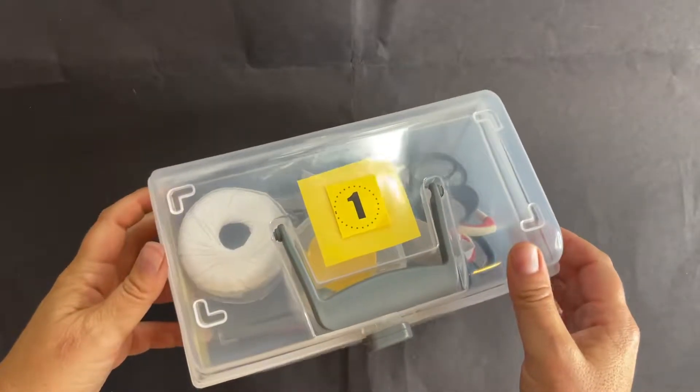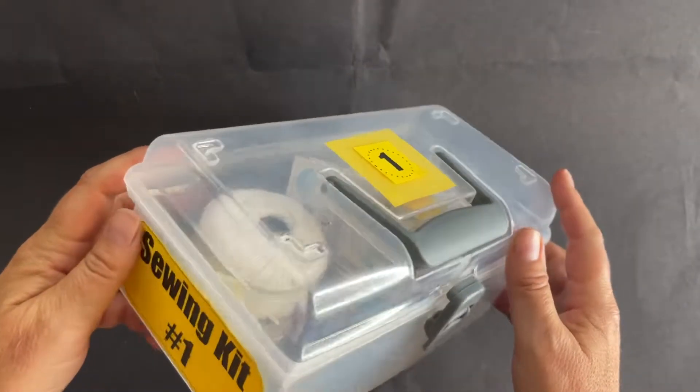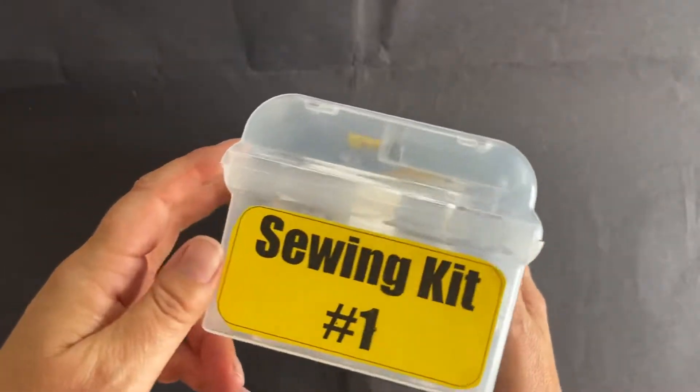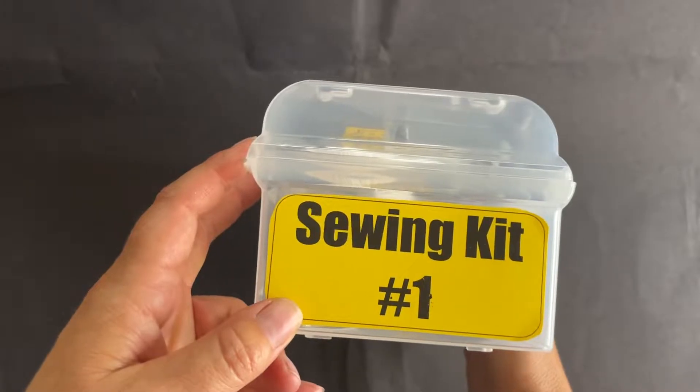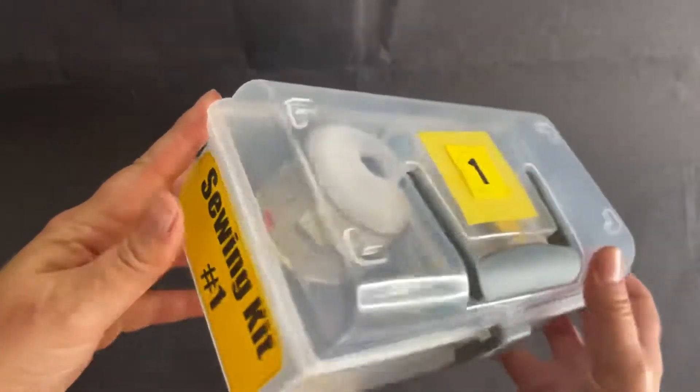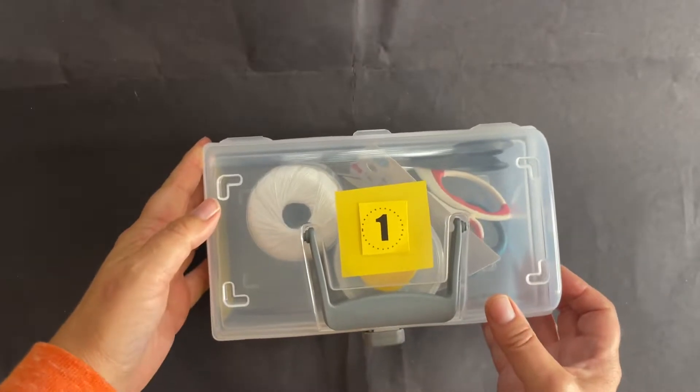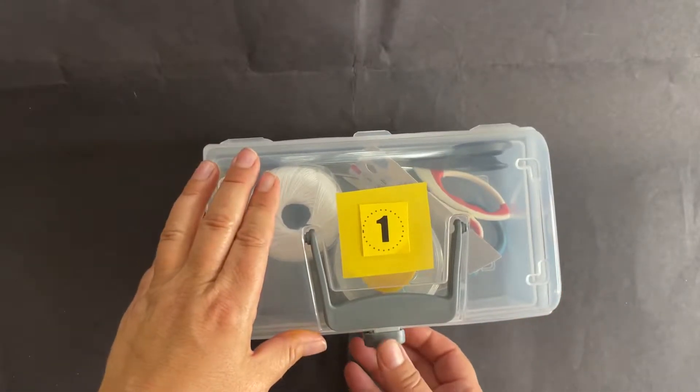Here is my sewing tackle box based on the idea from Cassie Stevens. Each kit is clearly labeled with a number that corresponds to the table number. The number is also on the top so you can see the case from afar.